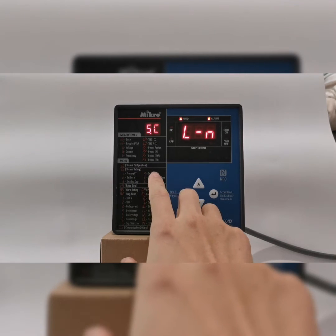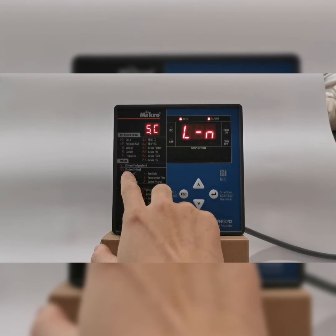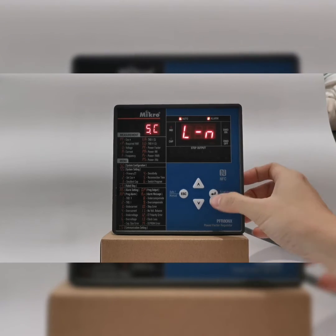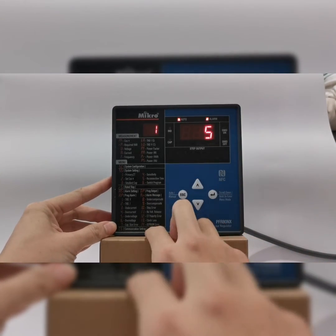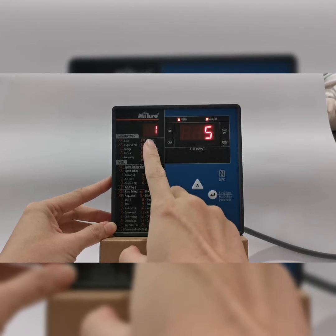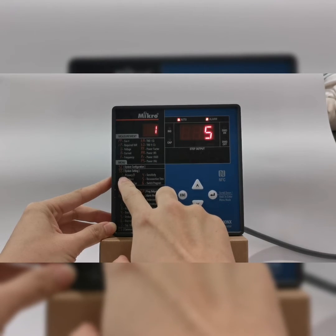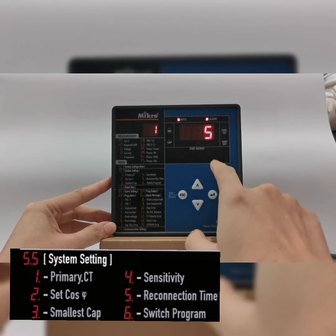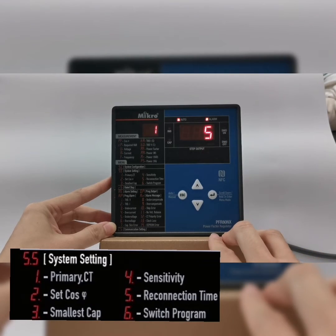SC1 means system configuration, but we need to go to system setting, so press enter again. Now it's SS1. SS1 means primary CT setting. Currently its setting is 5.